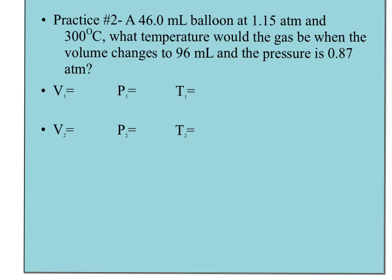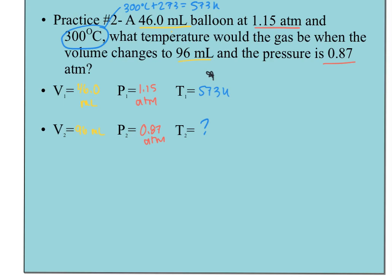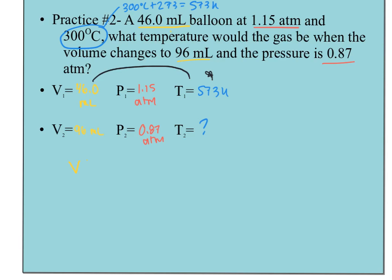Let's do one more before your practice and exit ticket. We have a 46-milliliter balloon at 1.15 atm — atmospheres — and 300 degrees Celsius. Converting: 300 plus 273 gives 573 Kelvin. What is the new temperature when the volume changes to 96 milliliters and the pressure drops to 0.87 atm? The variable we care most about is temperature.